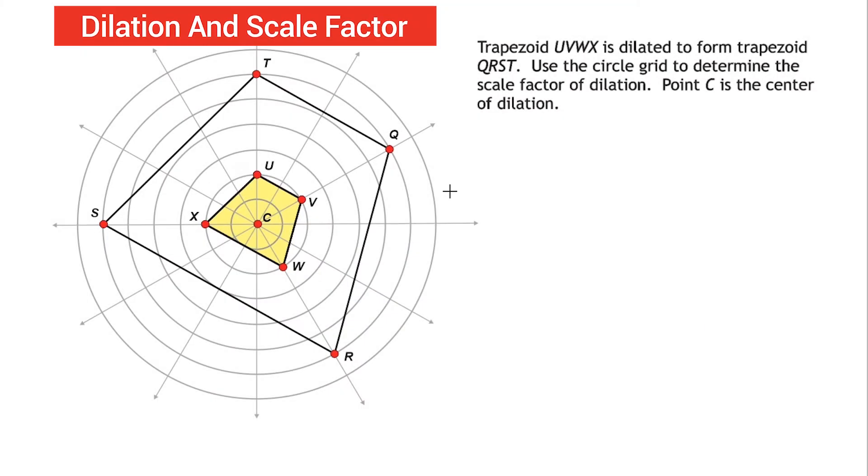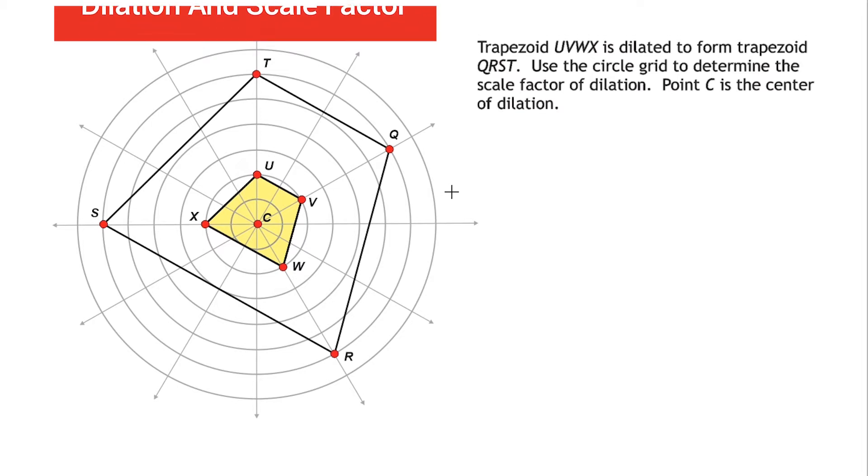What we have here is something called a circle grid, and we're going to use a circle grid to determine the scale factor of a trapezoid being dilated. The problem reads that trapezoid UVWX, which is shown here in yellow, is dilated to form trapezoid QRST. Use the circle grid to determine the scale factor of dilation. Point C is the center of dilation.